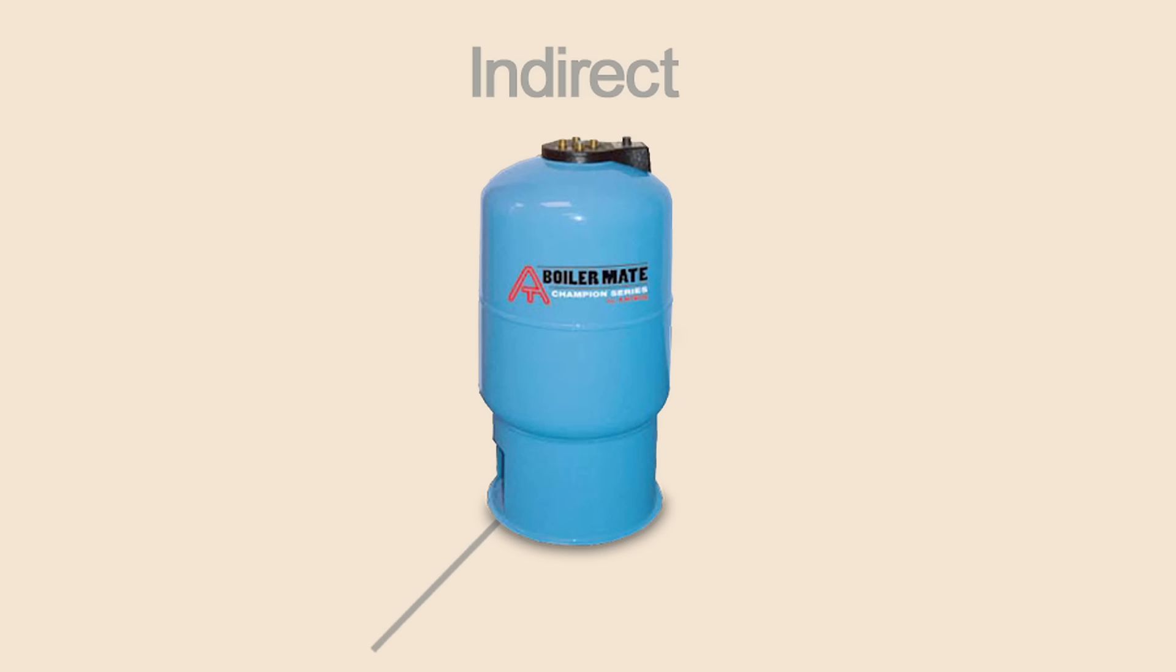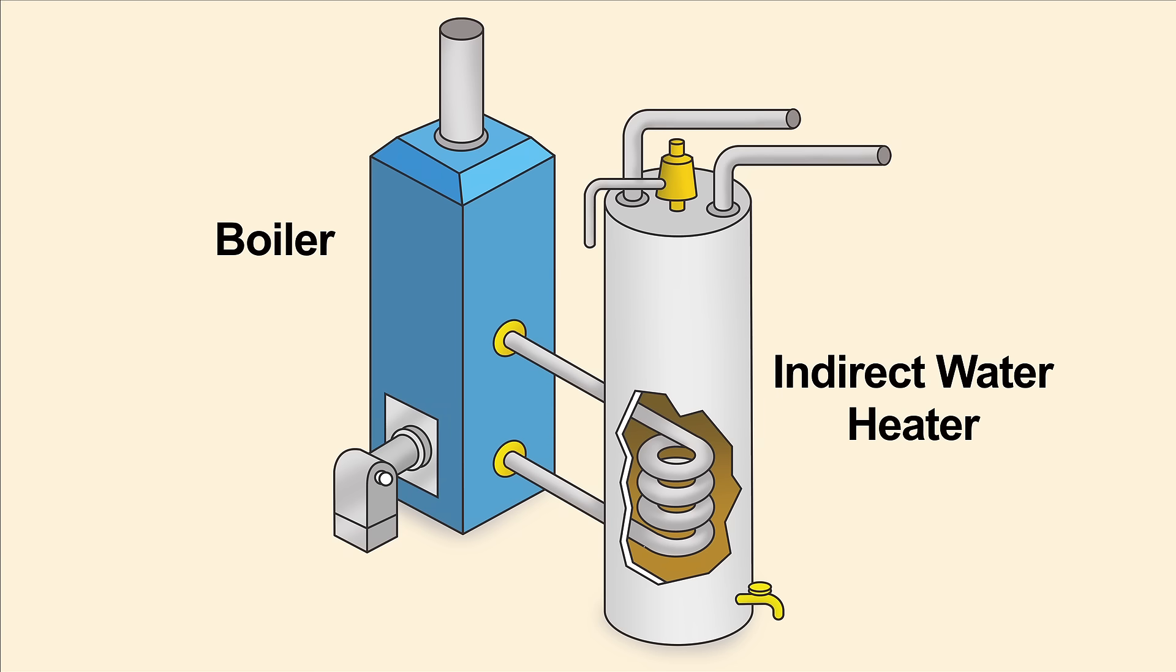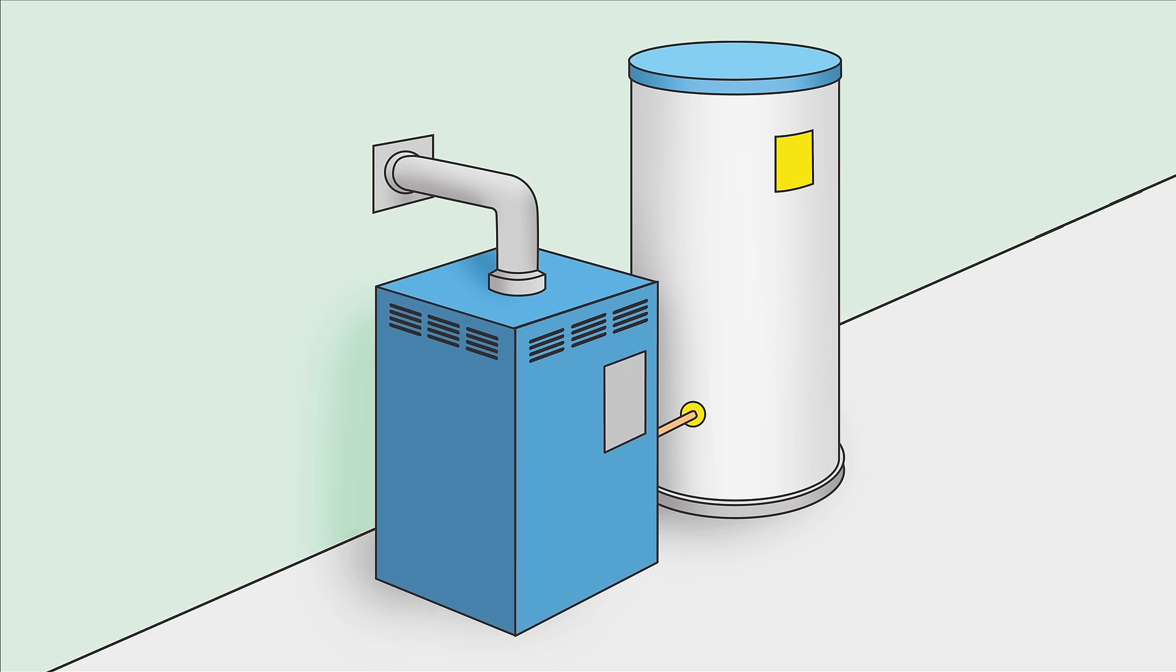Indirect water heaters are storage tanks that use a home's existing space heating systems to produce your hot water. This results in basically free hot water when you're running your boiler to heat your home. However, this requires you to keep your boiler on year round which is especially inefficient in warmer climates.